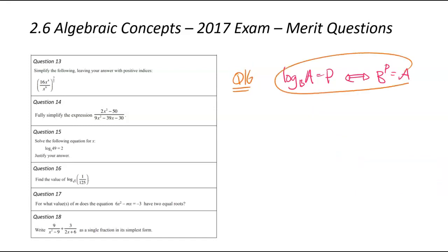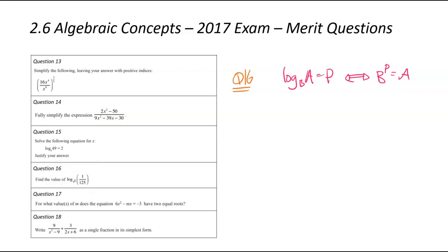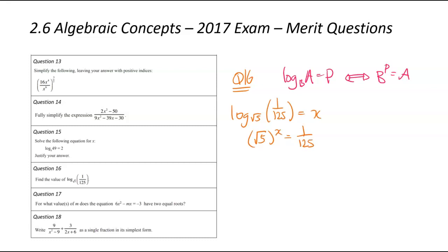We're up to question number 16 now. We've been asked to find the value of log with a base of the square root of 5 of 1 over 125. The key thing is we're trying to find the value — we don't know it currently. So we've got log base (square root of 5) of 1 over 125 equals x. That's our log version of the equation. We're now going to switch that into an index version: the square root of 5 to the power of x equals 1 over 125.